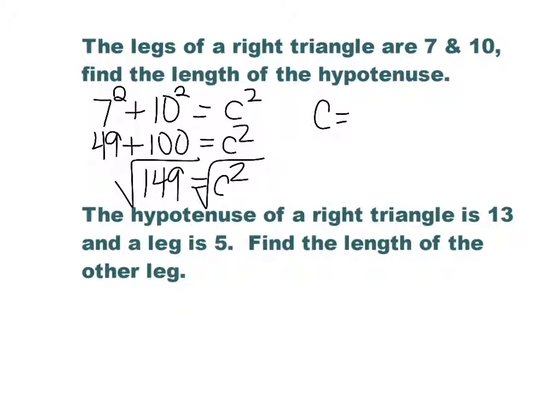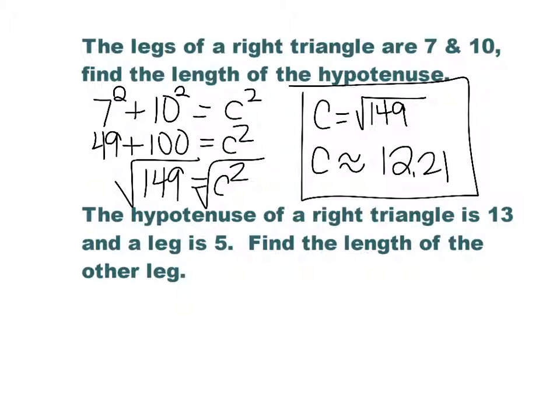Now there's two ways that we can answer this. We can leave this exact. Now normally I would try to reduce that radical, but I don't think 149 does reduce, so I'm going to leave it. But then the other thing that you can do is you can approximate that on your calculator, and so I'm going to do the square root of 149, and I got 12.21. So if it asks for a decimal approximation, that little wavy line means approximately 12.21. So either one of those are potential answers.